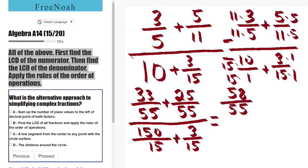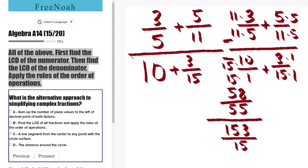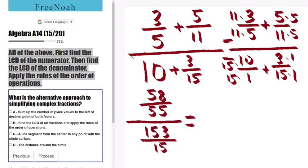58/55 divided by 150 plus 3, well that gives us 153/15. Now let's rewrite this statement horizontally - same statement: 58/55 divided by 153/15.